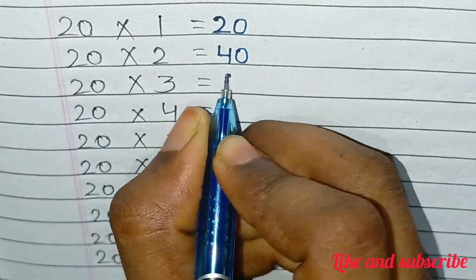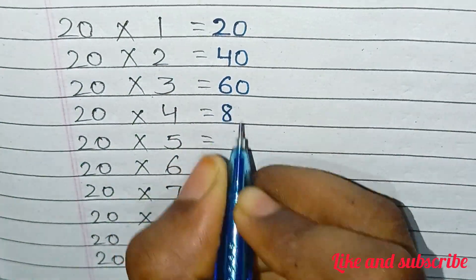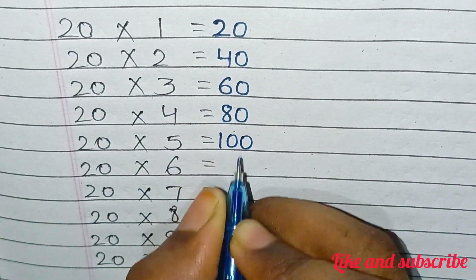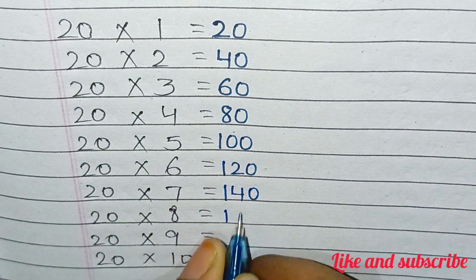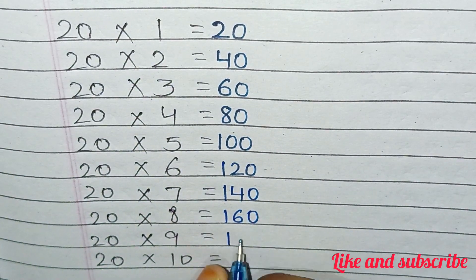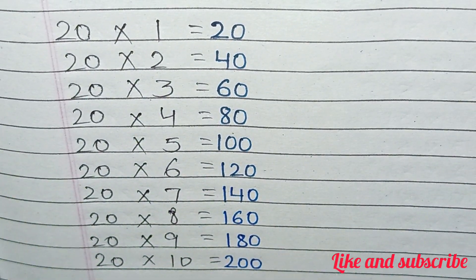20×1=20, 20×2=40, 20×3=60, 20×4=80, 20×5=100, 20×6=120, 20×7=140, 20×8=160, 20×9=180, 20×10=200. Thank you friends for watching my video.